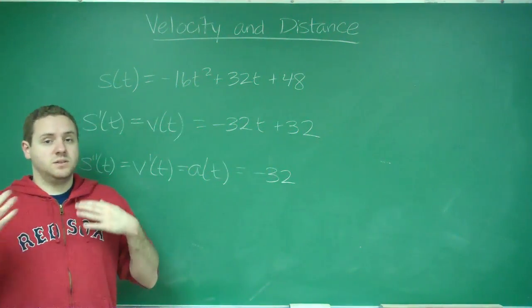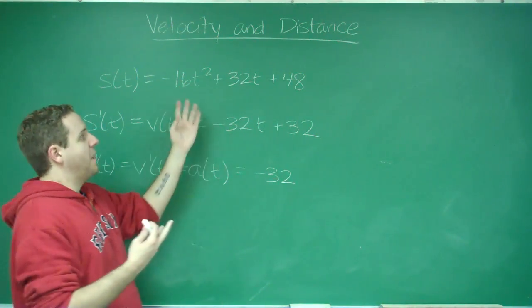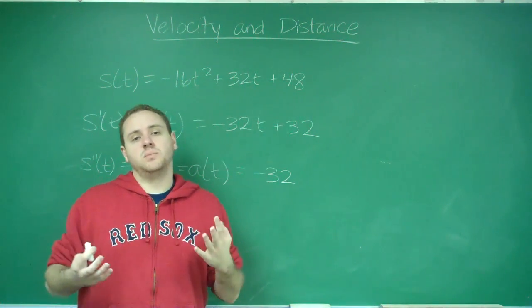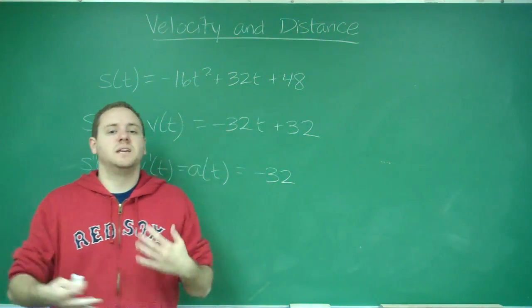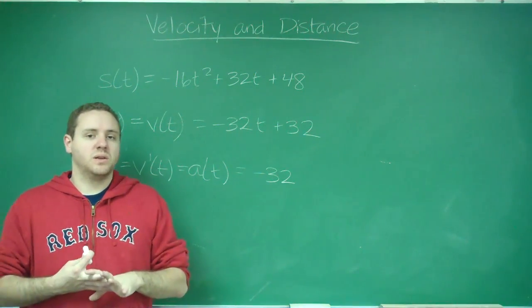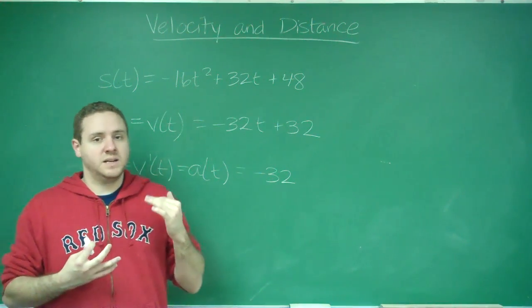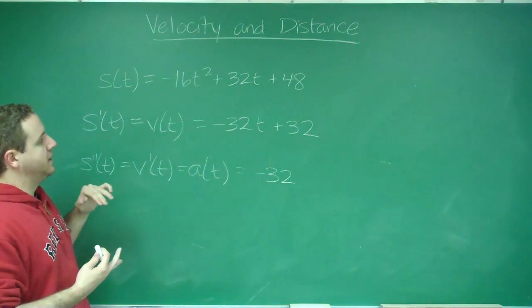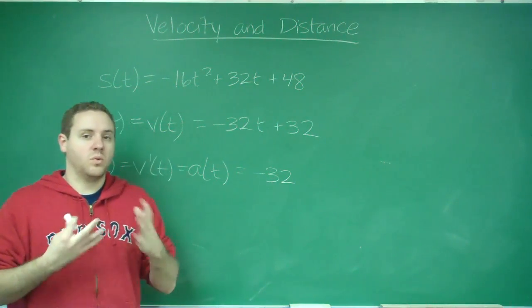If it returns to its starting point or something like that, that means your position function is going to be equal to zero. So there's a lot of keywords that you need to get in the habit of looking for when you have these distance velocity acceleration problems. But this is the hierarchy of how the functions are worked.